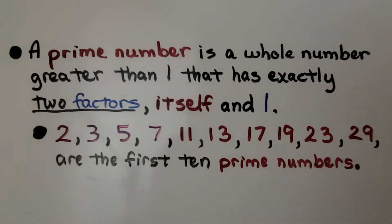2, 3, 5, 7, 11, 13, 17, 19, 23, and 29 are the first ten prime numbers. They're greater than one and the only factors they have are themselves and one.